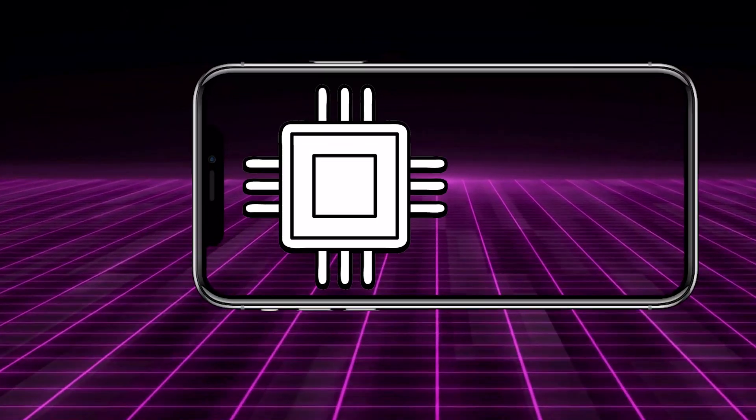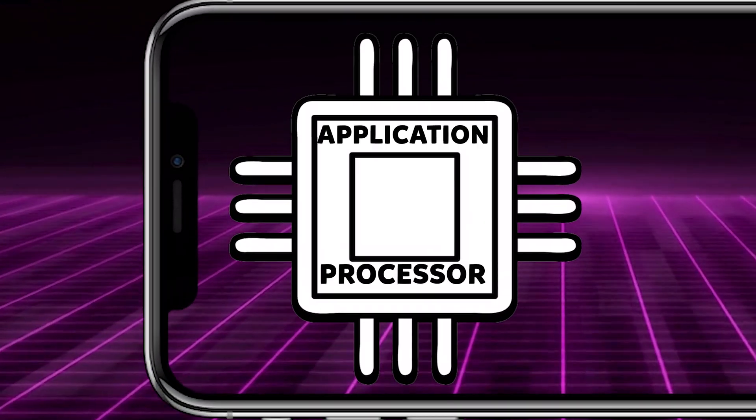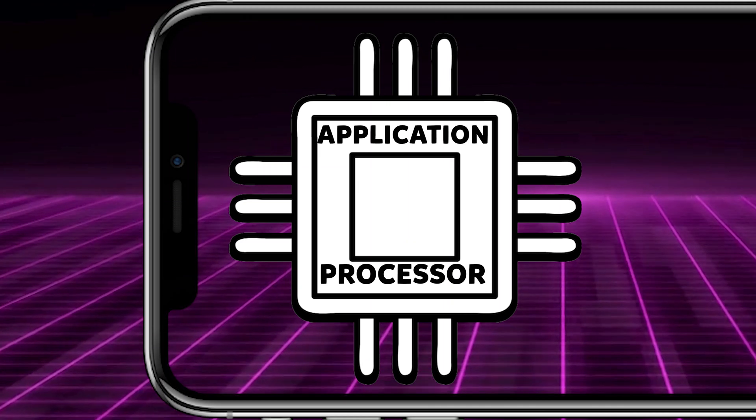If we as an attacker can get access to the baseband, we should be able to intercept communications or SMS messages, bypass two-factor authentication, and perform other types of attacks. So before we go further, I want to explain the difference between the application processor and the baseband processor.